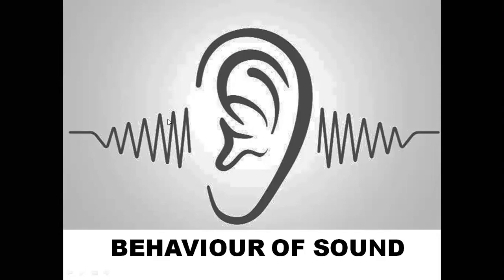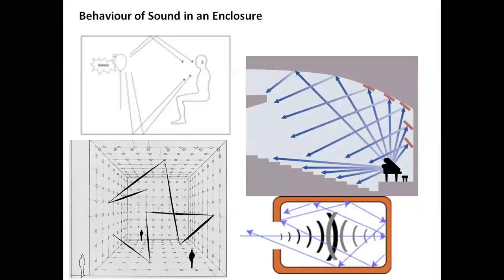Let's get into the behavior of sound. You have an incident wave, which we call a noise source, then the reflected wave, and there is absorption and transmission happening. This is the kind of behavior of sound which happens 99.9% of the time when there is no acoustical treatment in any building. Now, what is the behavior of sound in an enclosure? For example, if you see the section, you can see a piano — the sound transmitted from the piano hits the surface and gets reflected back to the audience. Some sound is directly transmitted to the audience. In the room space, the sound hits all surfaces: ceiling, walls, floors — it hits everywhere and then reaches the person.